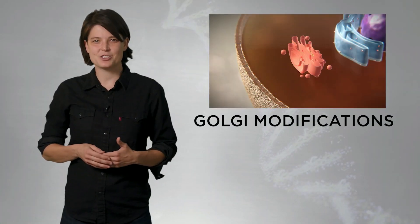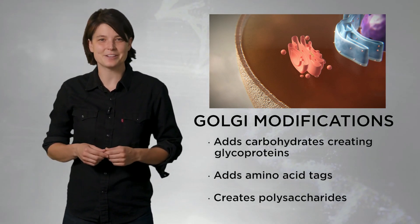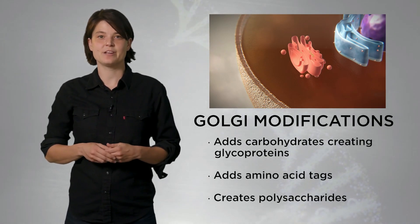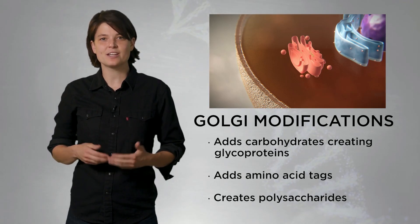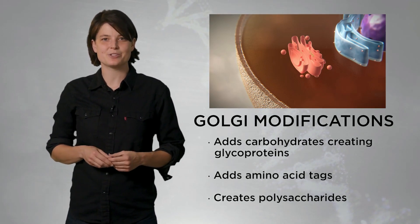These modifications might include, for instance, adding sugary carbohydrates to the protein, making it a glycoprotein. Some proteins are tagged with phosphate groups or additional amino acid motifs, allowing them to be sorted and packaged before they exit the trans-Golgi and are sent to specific locations, if needed.